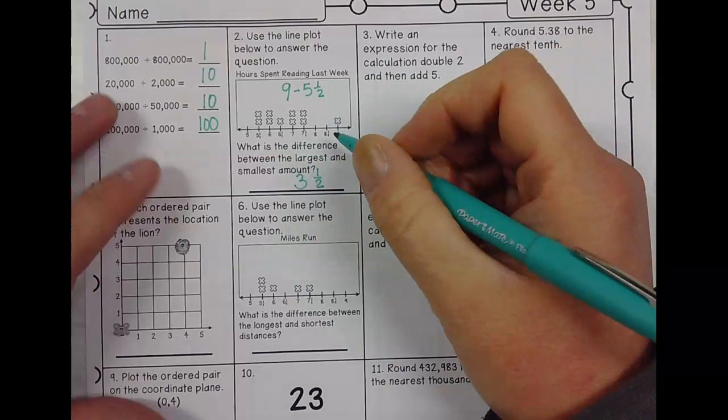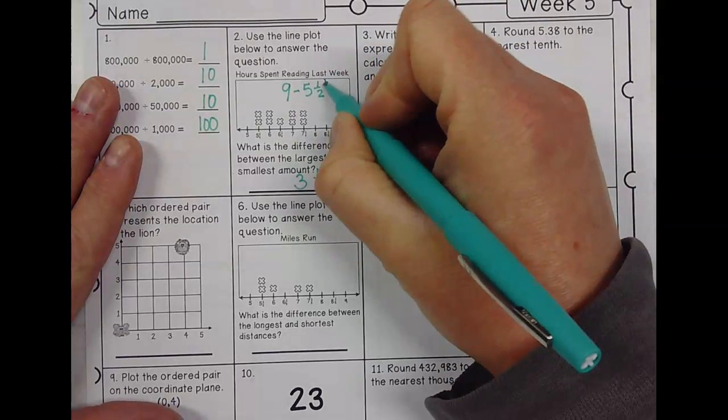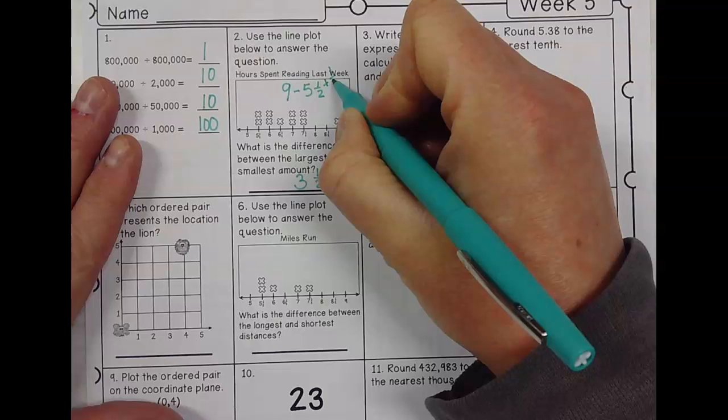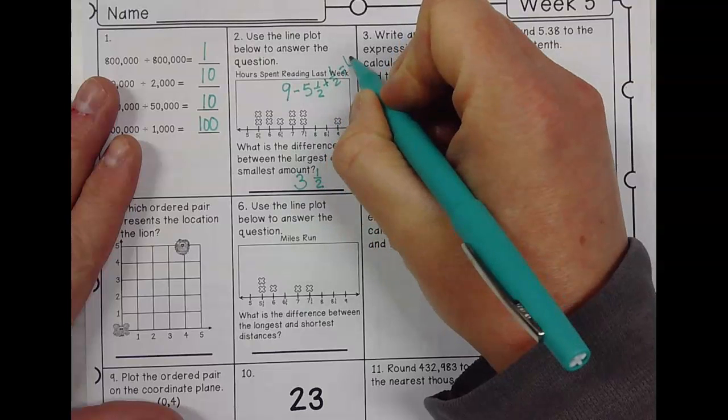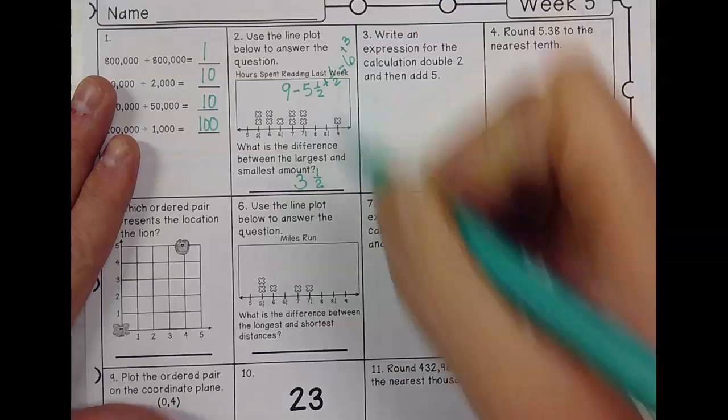So what I like to do sometimes when I'm subtracting is I like to add. So what's five and a half plus a half? Well, five and a half plus a half is six, and then six plus three gives me nine. So that's how I got that answer.